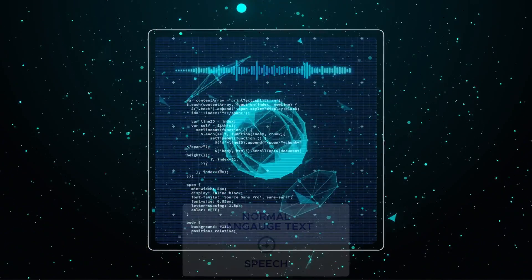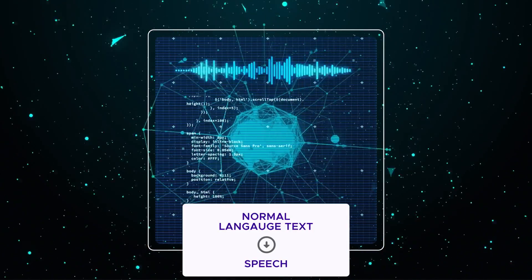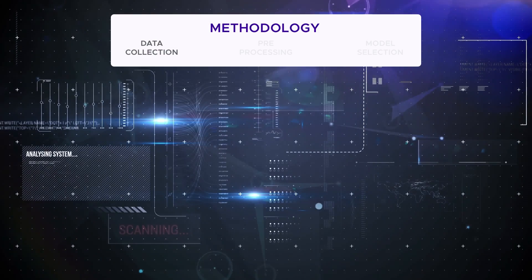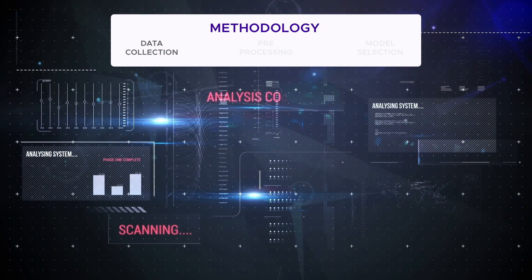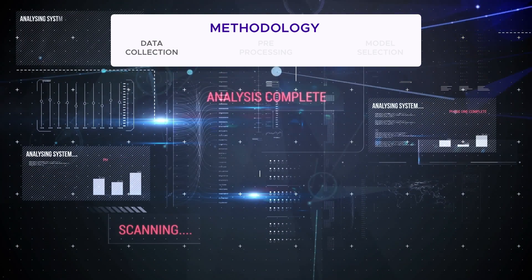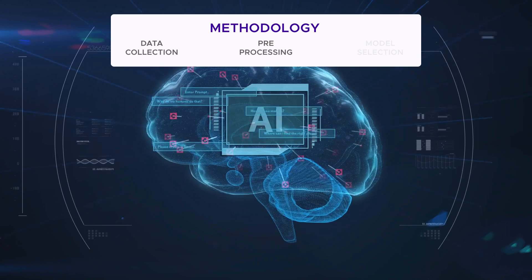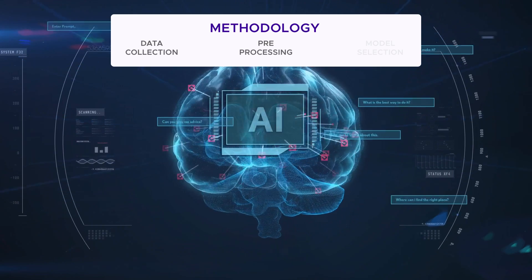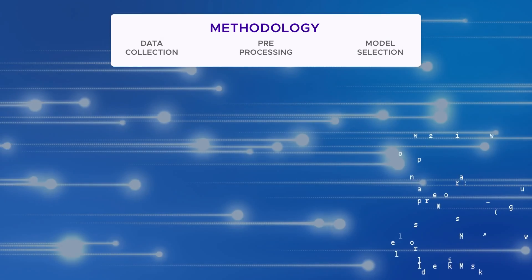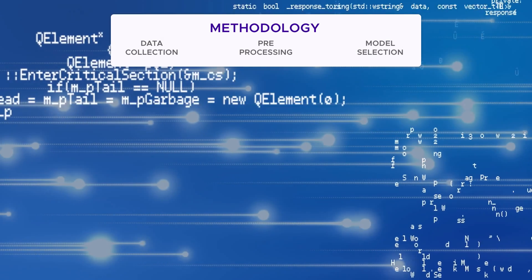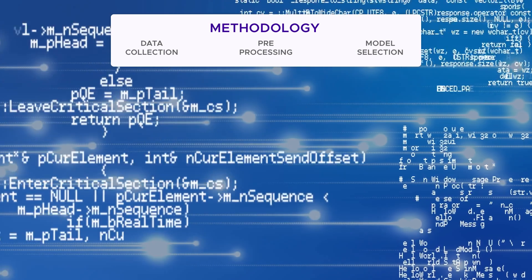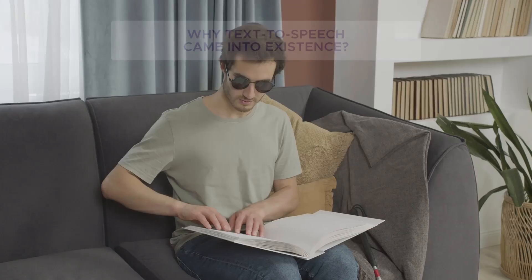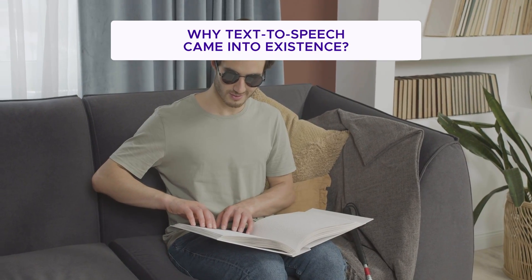A text-to-speech system converts normal language text into speech. Methodology includes data collection — gathering relevant data from diverse sources — pre-processing to clean, normalize, and engineer data, and model selection to choose and train machine learning and deep learning algorithms for peak performance.